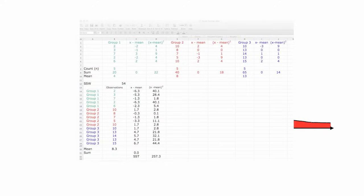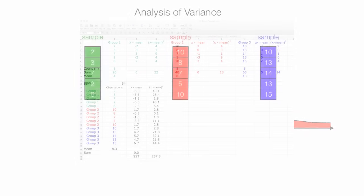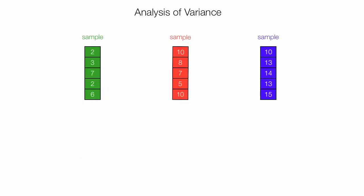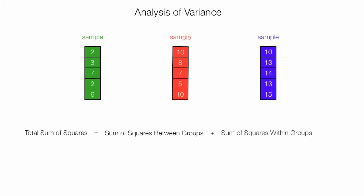I also have a whole video on how to do these same calculations using Microsoft Excel. Total sum of squares is equal to sum of squares between groups plus sum of squares within groups.